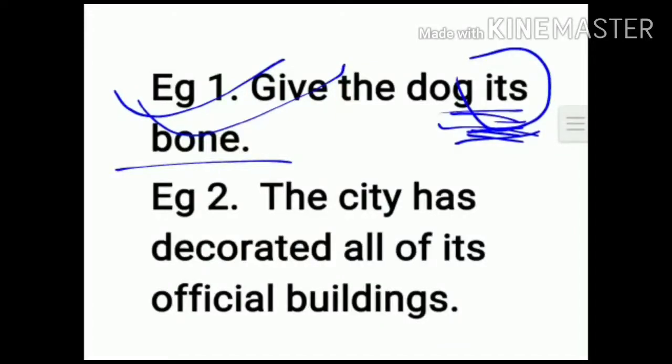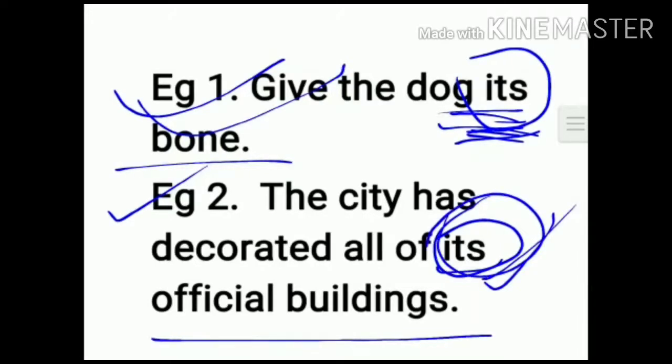Coming to second one: The city has decorated all of its official buildings. This it is showing possession, so that means we will use this it without apostrophe. Now coming to next page.